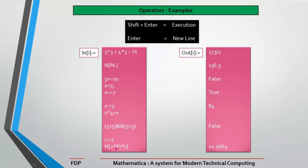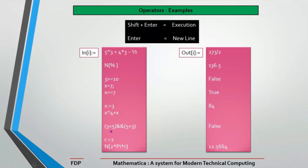Using Set Delayed (:=) without a semicolon also suppresses immediate execution. So x := 3 means x is defined but not yet evaluated. Then x^4 + 4 evaluates to 3^4 + 3 = 84. For logical operators: (2 < 5) && (5 < 3) — the first part is True, the second is False, and True && False gives False. You can do similar operations with expressions like 2πr.